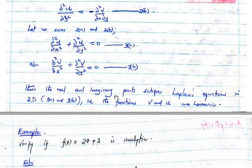The real and the imaginary part satisfies Laplace's equations if this is what we make the function to go through these tests. In 2d that is using 3a and 3b as I've given you. The function u and v are said to be harmonic if they obey these conditions.